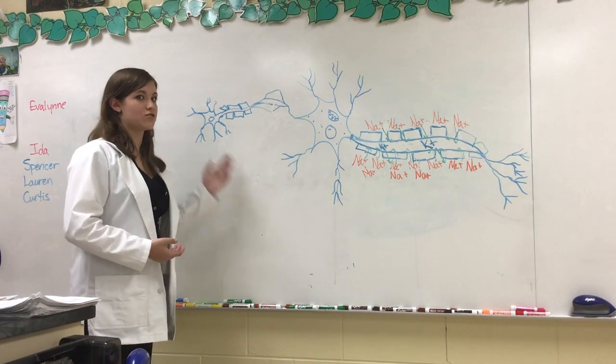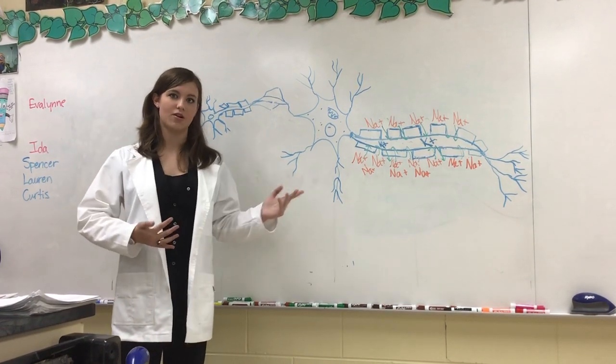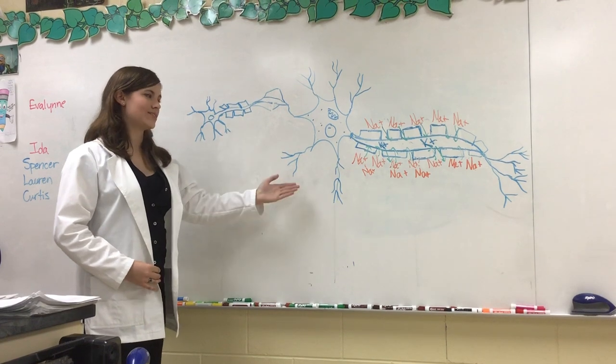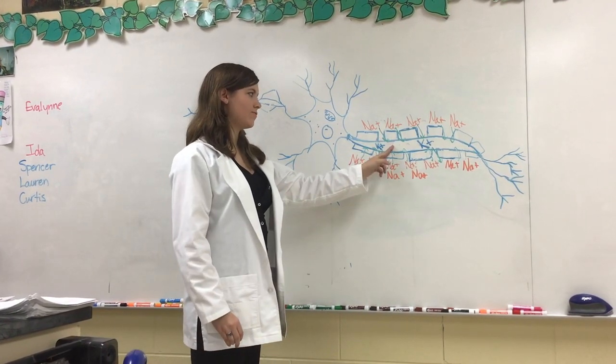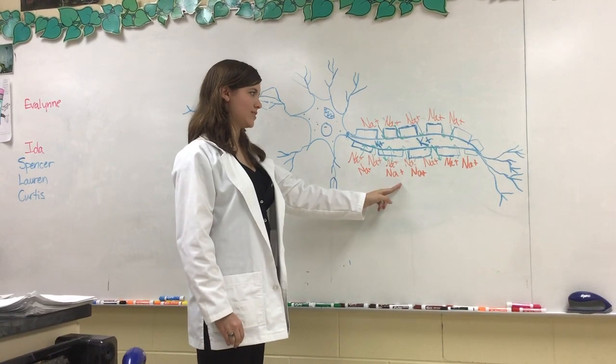The way that all of this works is through electrical signals passing between neurons. It begins when the cell is in a resting state, like it is over here, meaning that there is a negative charge inside of the cell and a positive charge outside of the cell.